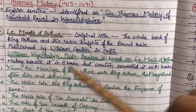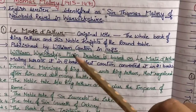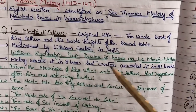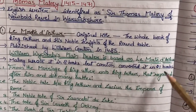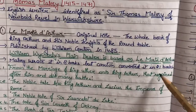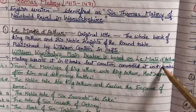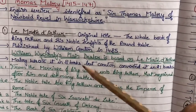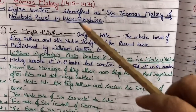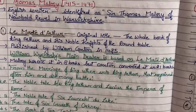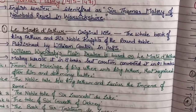Originally, Mallory wrote 8 books, but Caxton converted them into 21 books. These are the 8 books that Thomas Mallory wrote.